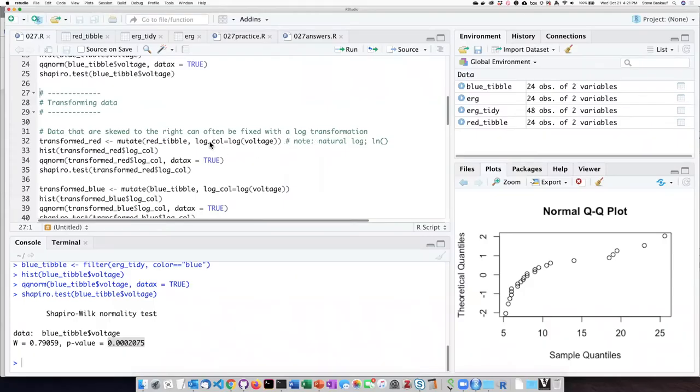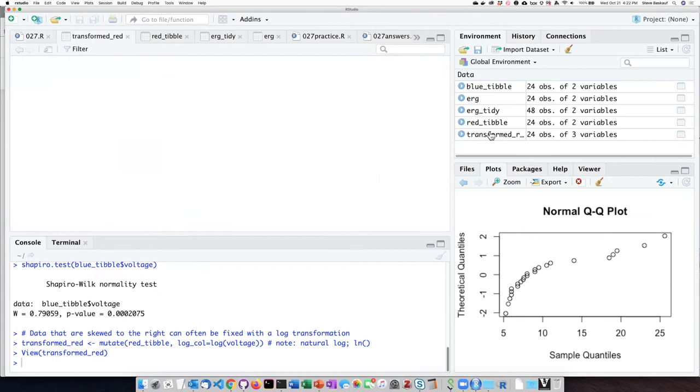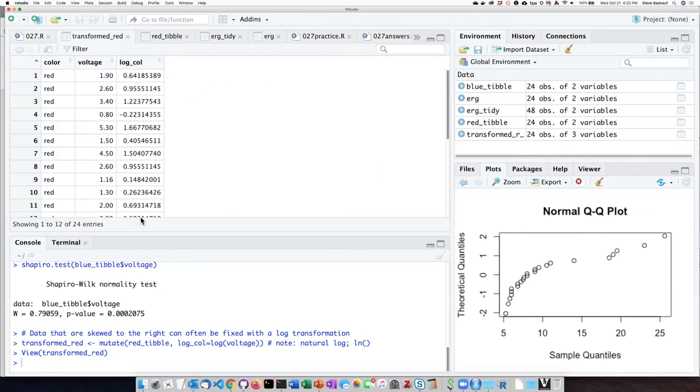To do the transformation, it's fairly simple. We're just going to do a mutate operation and we will start with the red tipple and we'll create a new column called log call for the log column. And that column is going to consist of the logs of each of the voltage values. So let's run that and we see here is our new column, which has the logs in it.